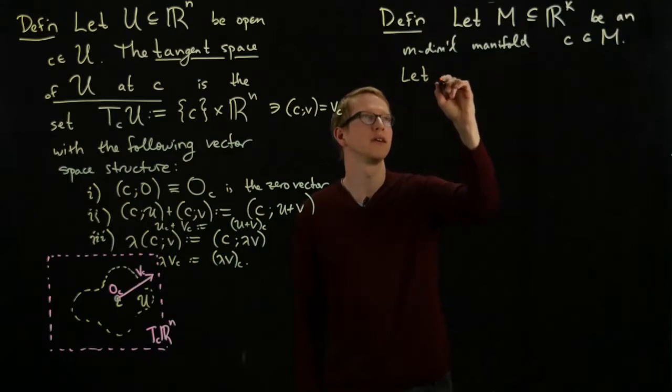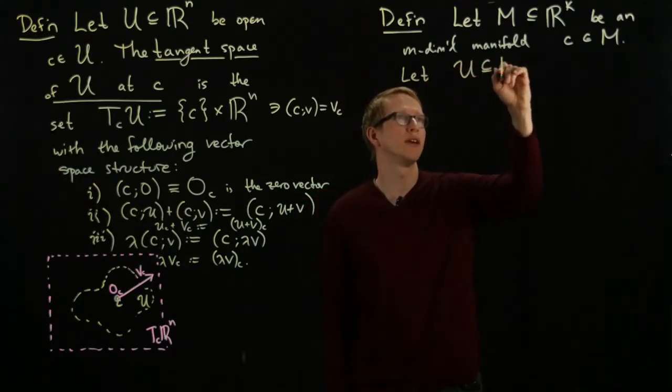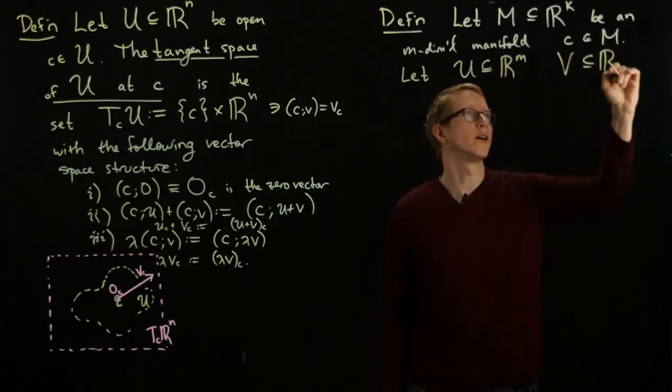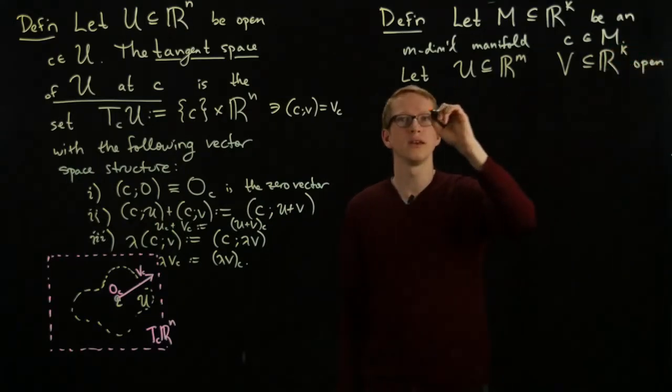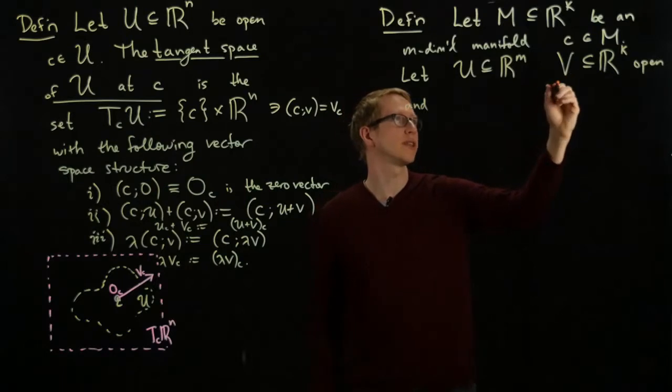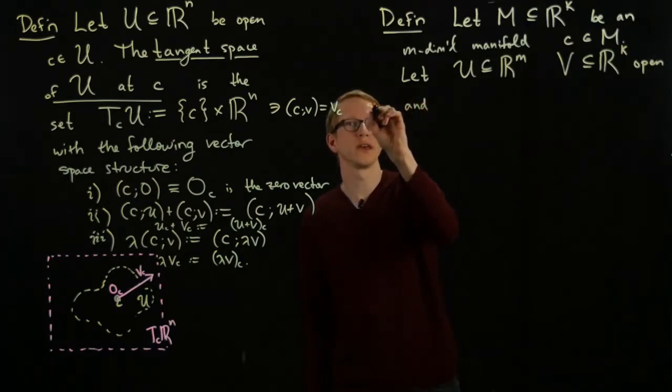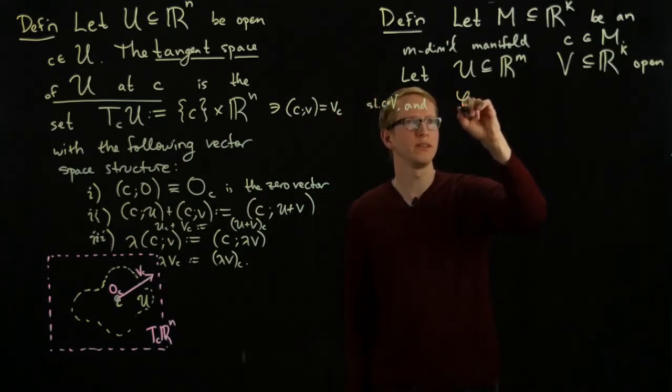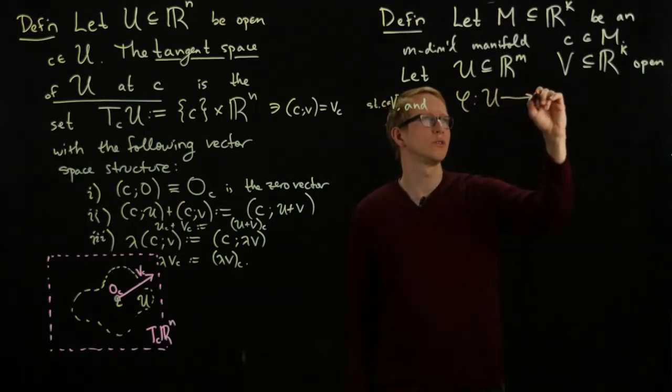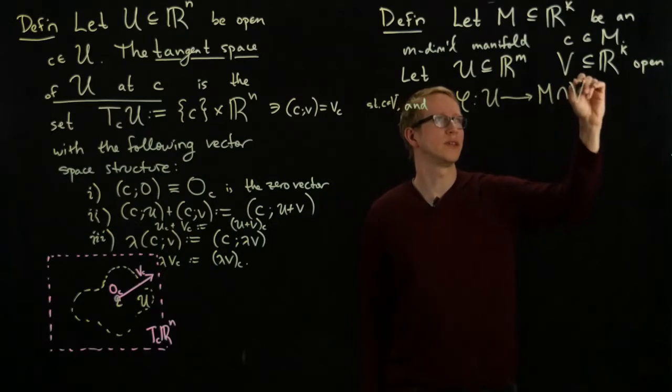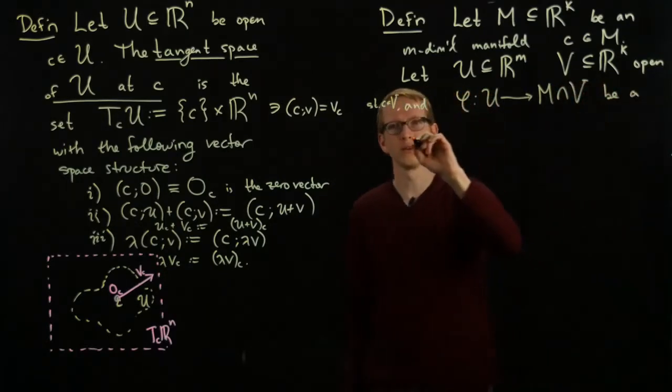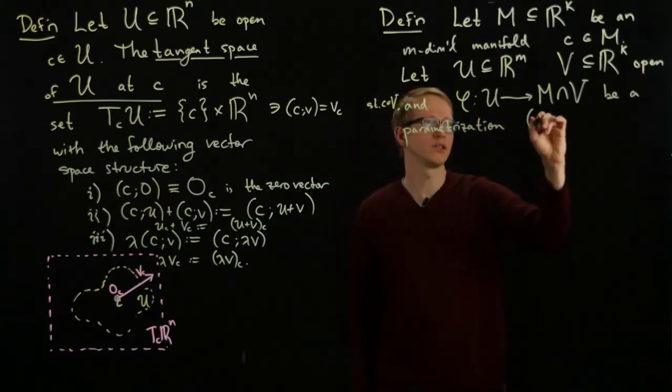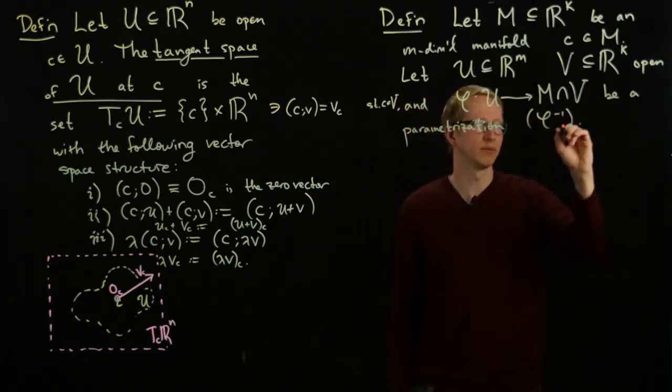So let U be an open subset of Rm, and V an open subset of Rk, both open, and such that c is in V. Let phi be a function from U to M intersect V be a parameterization, and let's call its inverse phi inverse. Let me draw this as a picture.